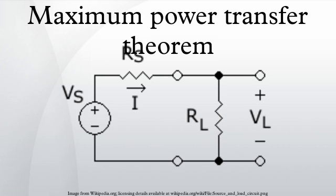By Ohm's law, I is simply the source voltage divided by the total circuit resistance. The power P_L dissipated in the load is the square of the current multiplied by the resistance.